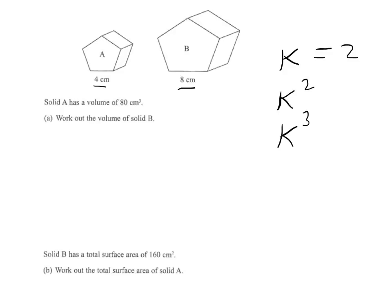But the volume factor is going to be 2 cubed. So to work out the large volume, we take the small volume and we times it by 2 cubed, which is 80 times 8. That comes to 640 centimeters cubed.